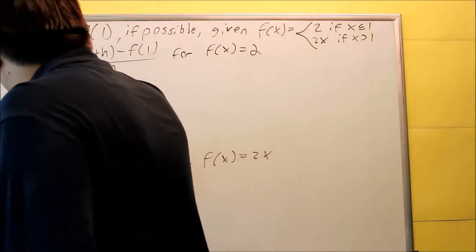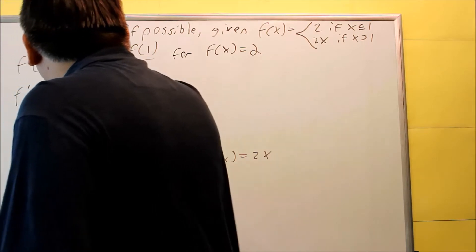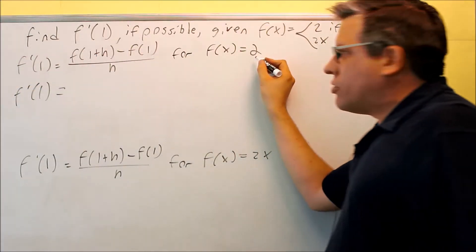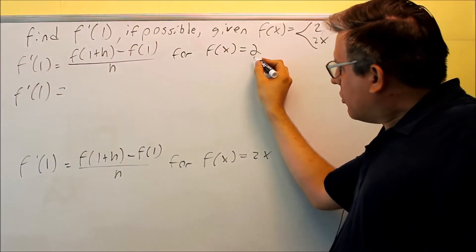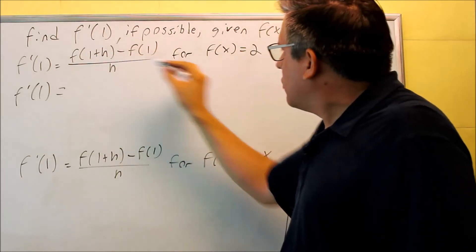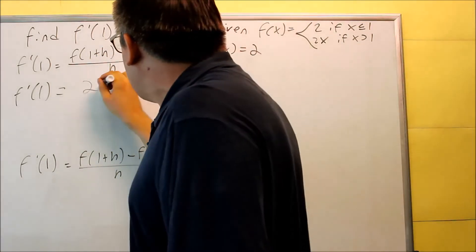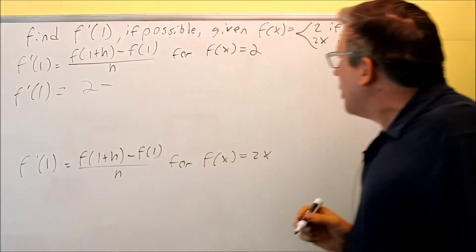We're going to do f prime of 1, and we're using 2. Now if I use 2, there's nothing to plug that into, which means that this is always going to be 2 here. f of 1.